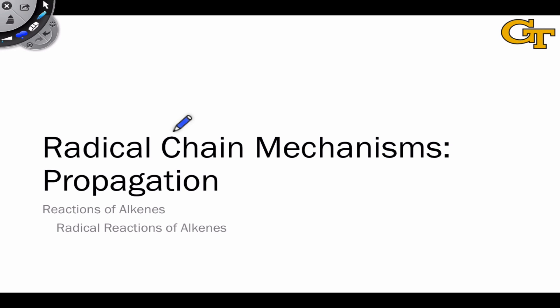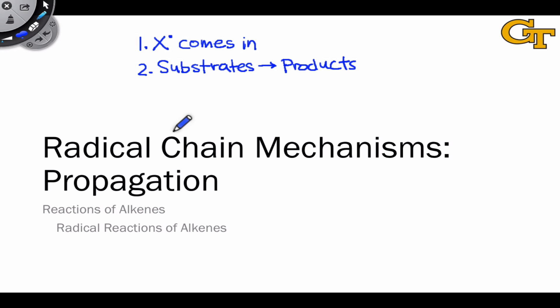Propagation is really the meat of radical chain mechanisms, where the substrate molecules are converted to products through a series of radical intermediates. There are three key things that happen in the propagation phase. The first is that the propagating radical, which I'm representing here as x dot, comes in and engages with one of the substrates. Through a series of radical intermediates, in which the total number of electrons is always odd, the substrates are converted to products.